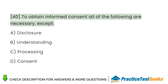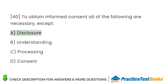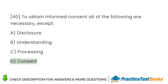To obtain informed consent, all of the following are necessary except: A. Disclosure. B. Understanding. C. Processing. D. Consent.